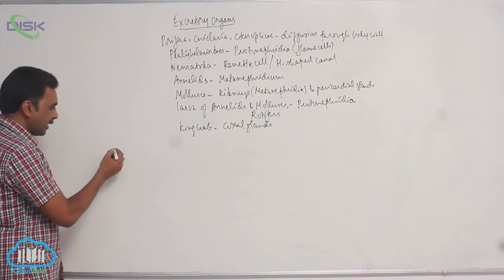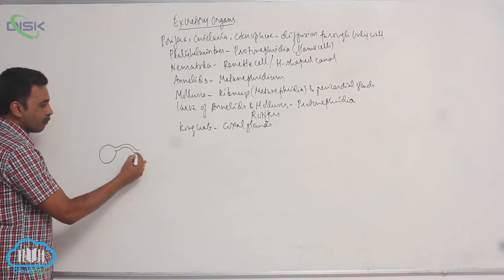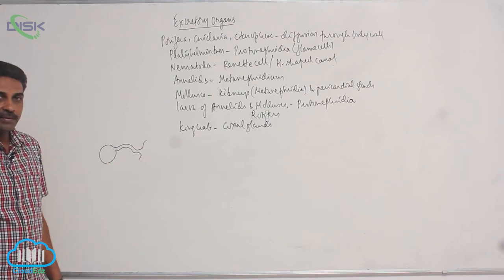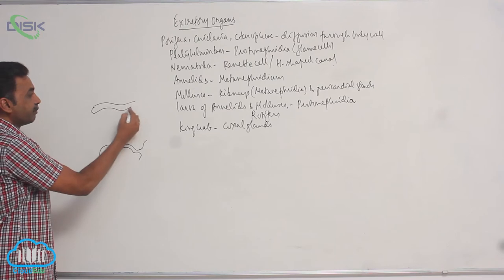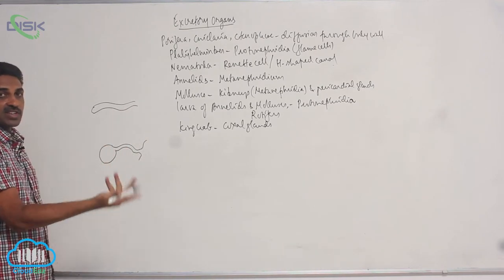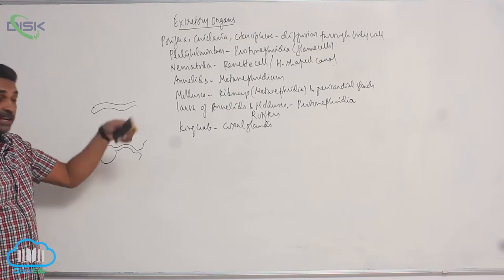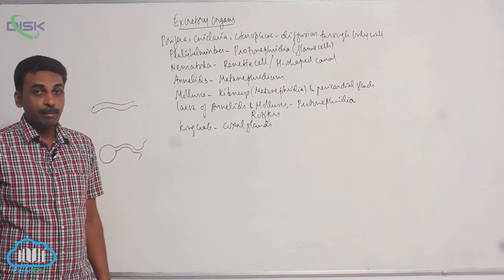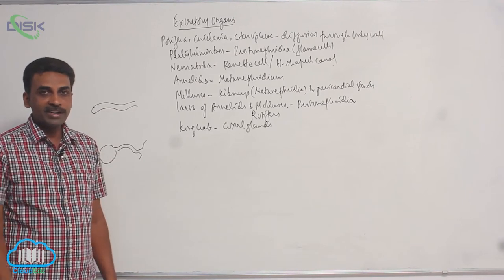It's a simple gland. They are actually called saccate nephridia. When nephridia form a sac-like structure, it is called saccate nephridium. Saccate nephridia include coxal glands and antennal glands, based on where they are opening and where they are located.